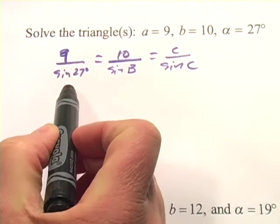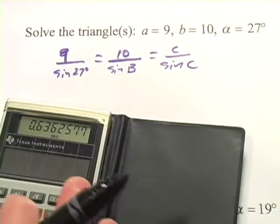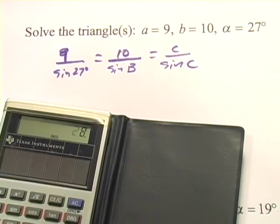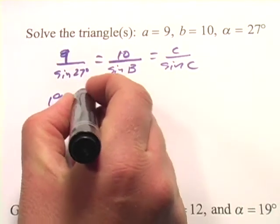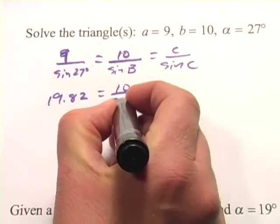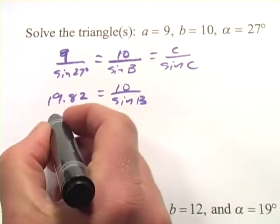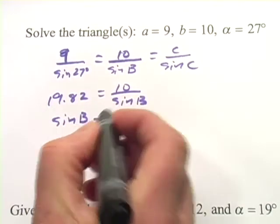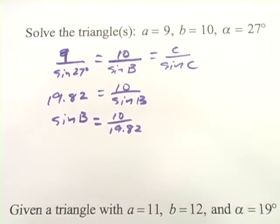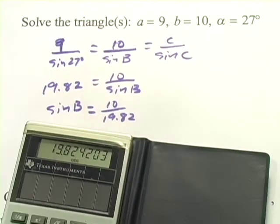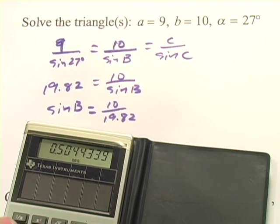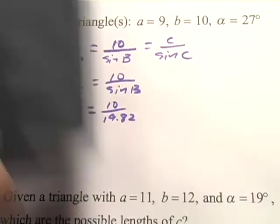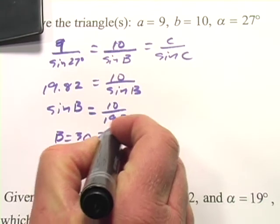So first we're going to find this value, and then we can solve for B. So we've got 9 divided by sine 27, and that's giving us 19.82. We can set that equal to 10 over the sine of B, and if you rearrange this, you would get sine of B is 10 divided by 19.82. And then we'll take the inverse sine to get the value of B, and we get 30.29 here. So one value of B is 30.29 degrees.